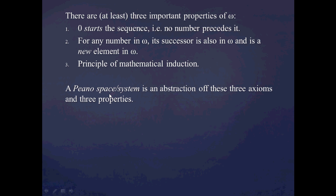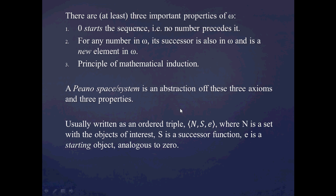The Peano system idea is going to be just taking these three postulates or axioms and incorporating those three properties: the notion of a set of interest, a starting element, and a successor function. And usually you're going to see this written as an ordered triple (N, s, e), where N is that set of interest, s is the successor function, and e is the starting element — what I call the zero element.